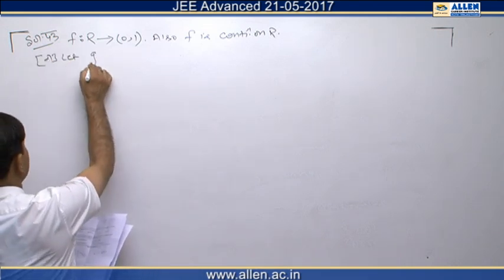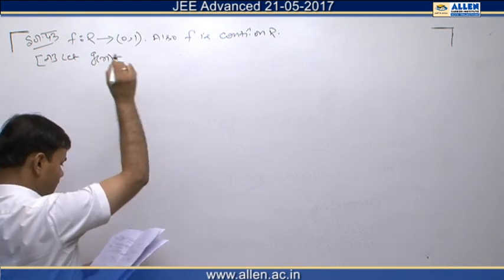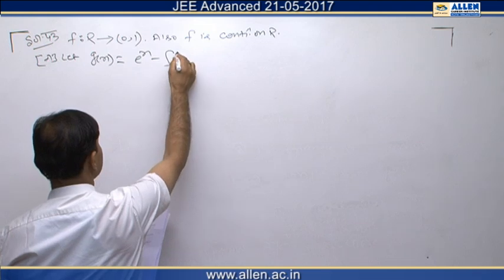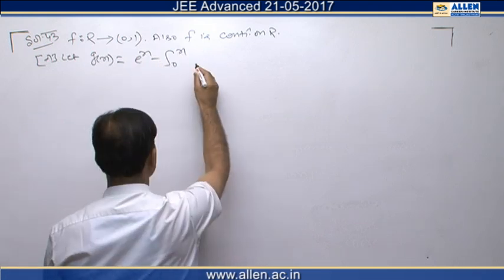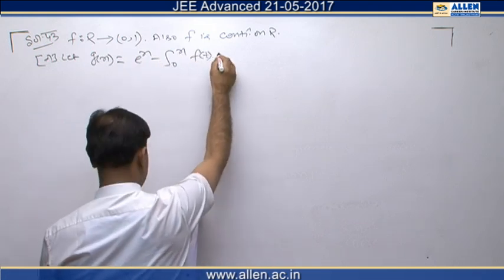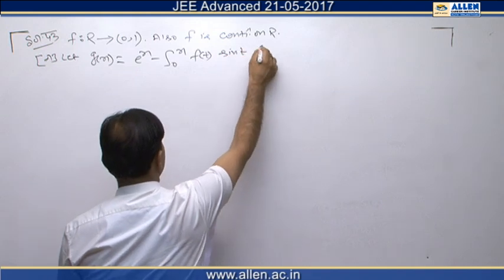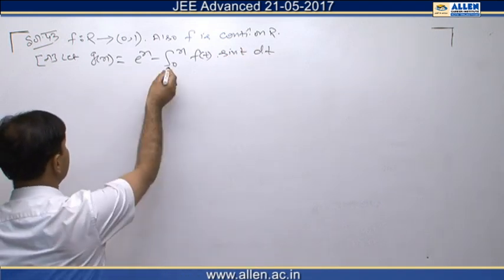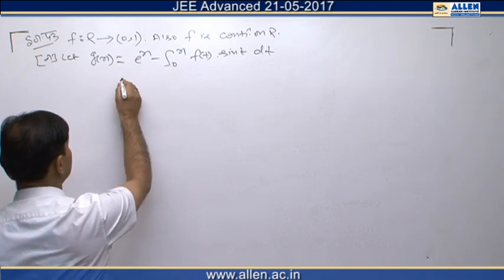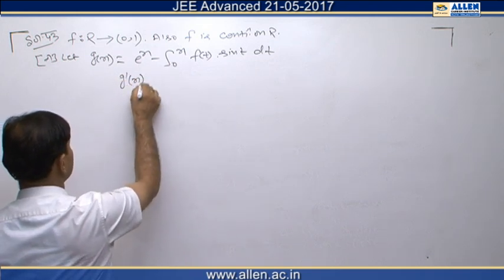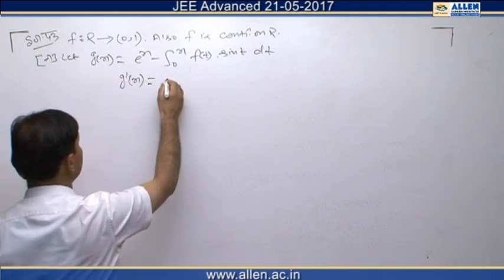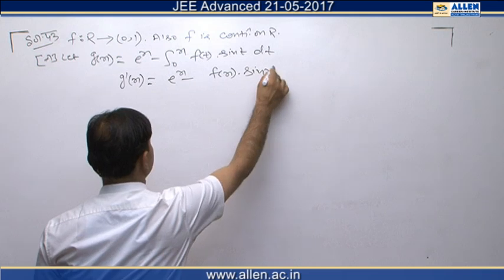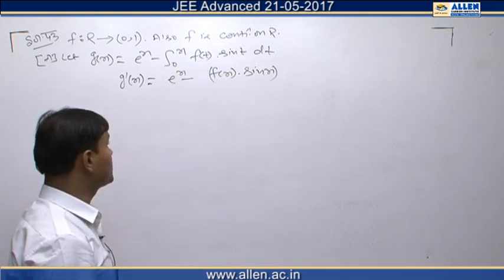In option A, we consider the function g(x) given by e^x minus the definite integral from 0 to x of f(t)·sin(t) dt. If we find the derivative of this function, we get g'(x) = e^x minus f(x)·sin(x). Here we have applied the Leibniz rule.